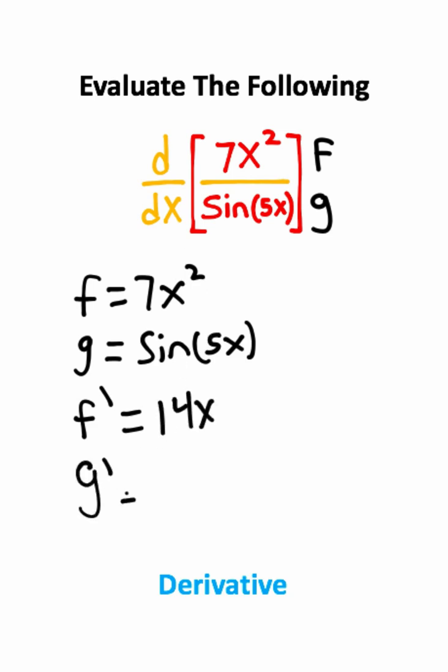Now we'll take the derivative of g, this one's a little more complicated. The derivative of sine is cosine, but notice you still have a function within this cosine function. So you need to take the cosine function and multiply it by the derivative of 5x, in which case the x will derive up and you'll just end up with 5.